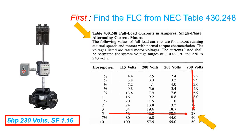When we are going to size the branch circuit and feeder conductors, we're going to use the FLC, or full load current, that is in Table 430.50. The first step is to find the full load current from Table 430.248 for single phase, and 430.50 for three phase. For 5 horsepower, 230 volts, it says 28 amperes.